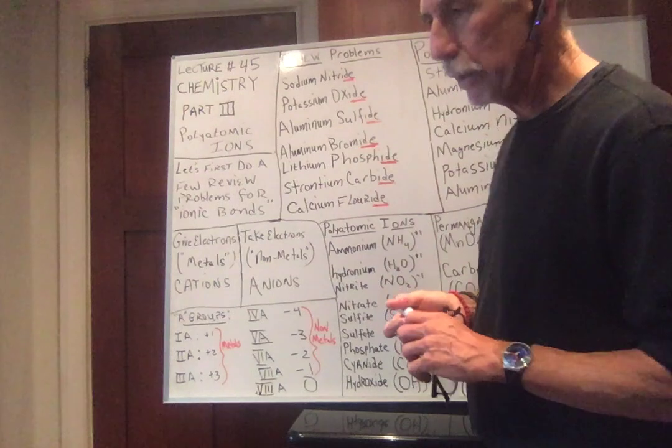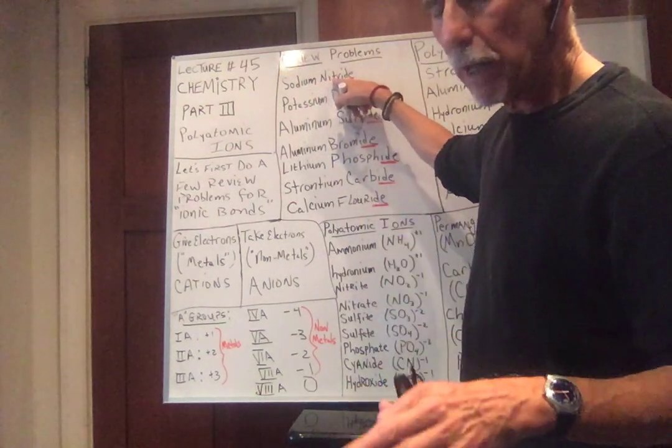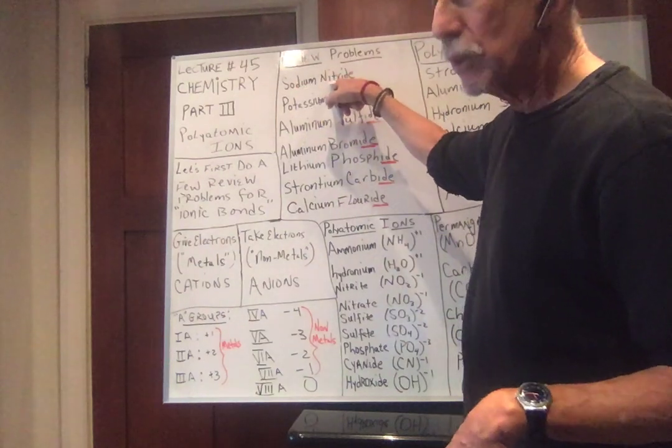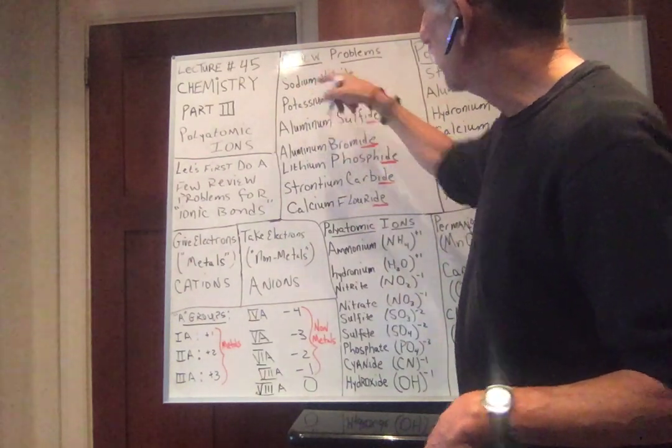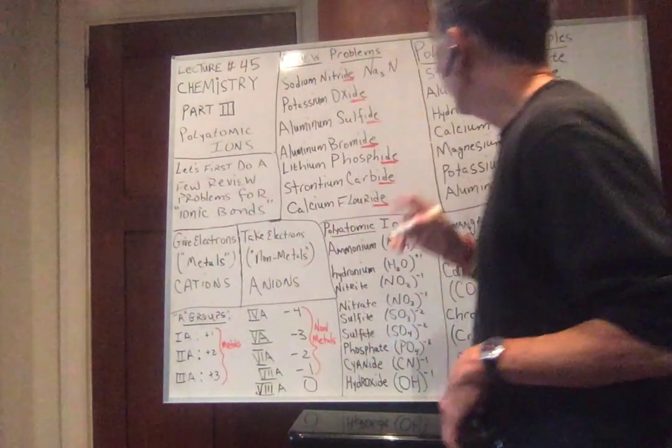Let's look at sodium nitride. Sodium, if you look in your periodic table, is in group 1A, so it wants to give one electron. Nitrogen in group 5A needs three electrons. Gives one, needs three — so it's going to take three sodiums to make one nitrogen happy. So this should be Na₃N. This was plus one, and this was minus three. Three times one is three, one times minus three is minus three; three minus three is zero.